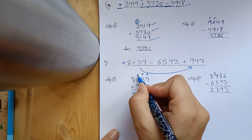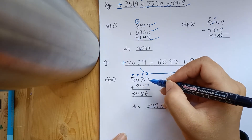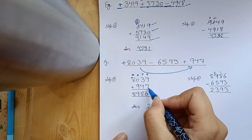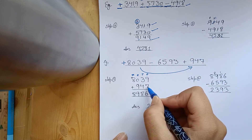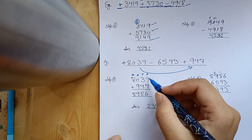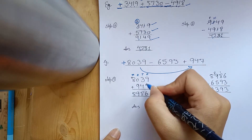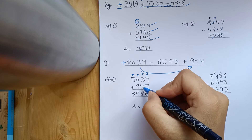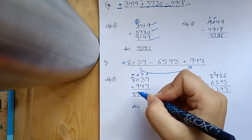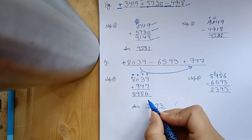Let's set the place value here so there is no confusion, because you can see some numbers are 4 digits and some are 3 digits. You should know which place value the digit 7 belongs to. So let's set the place value and then we will add them. 9 plus 7 is 16, write 6 carry 1. 3 plus 4 is 7, 7 plus 1 is 8. Then 0 plus 9 is 9, and 8 stays as it is below.